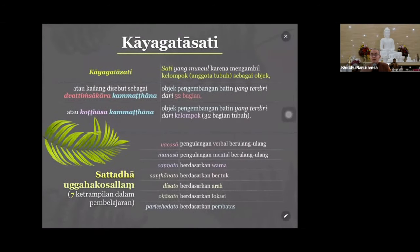Kita balik lagi. Sekarang kita sudah tahu apa itu 32 bagian tubuh. Jadi Kaya Gata Sati sebetulnya adalah menggunakan 32 bagian tubuh ini sebagai objek dari meditasi. Intinya adalah meditasi 32 bagian tubuh. Kemudian untuk melatih meditasi ini, dijelaskan harus belajar dulu - tujuh keterampilan dalam pembelajaran, Ugaha Kosalang.